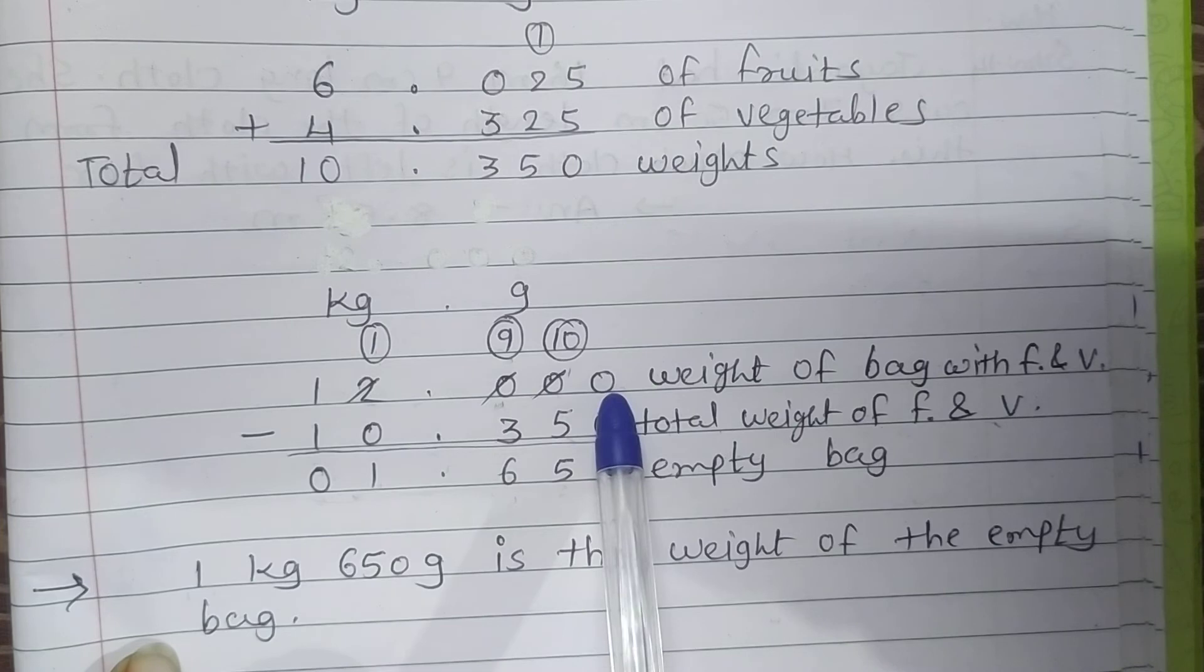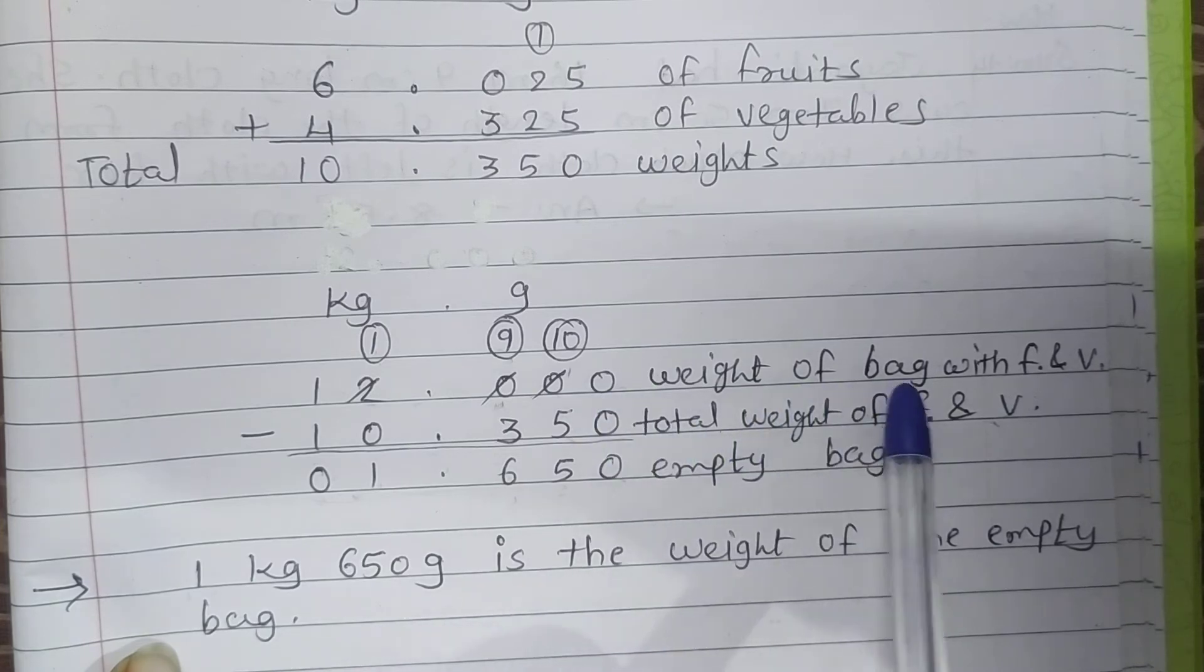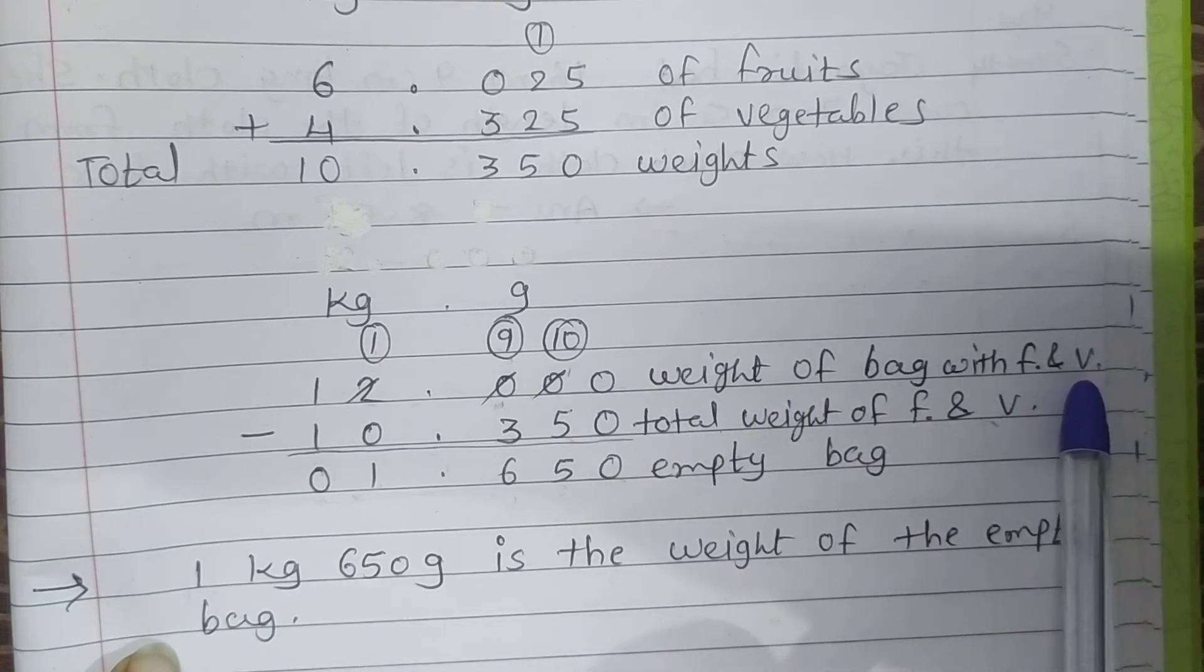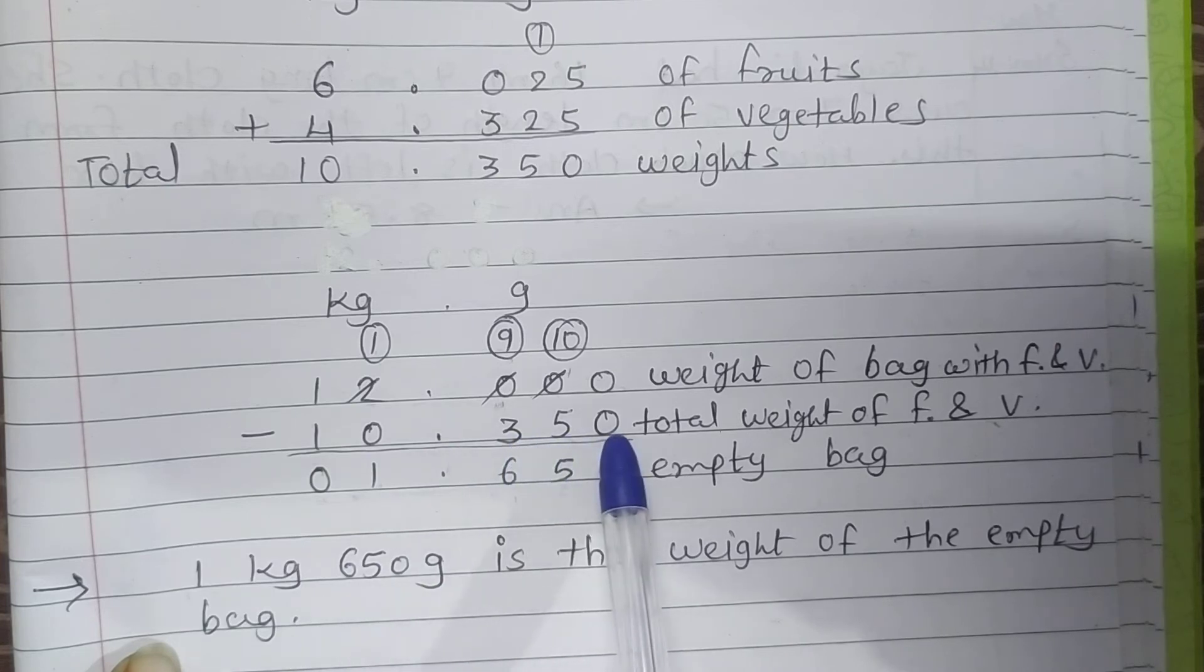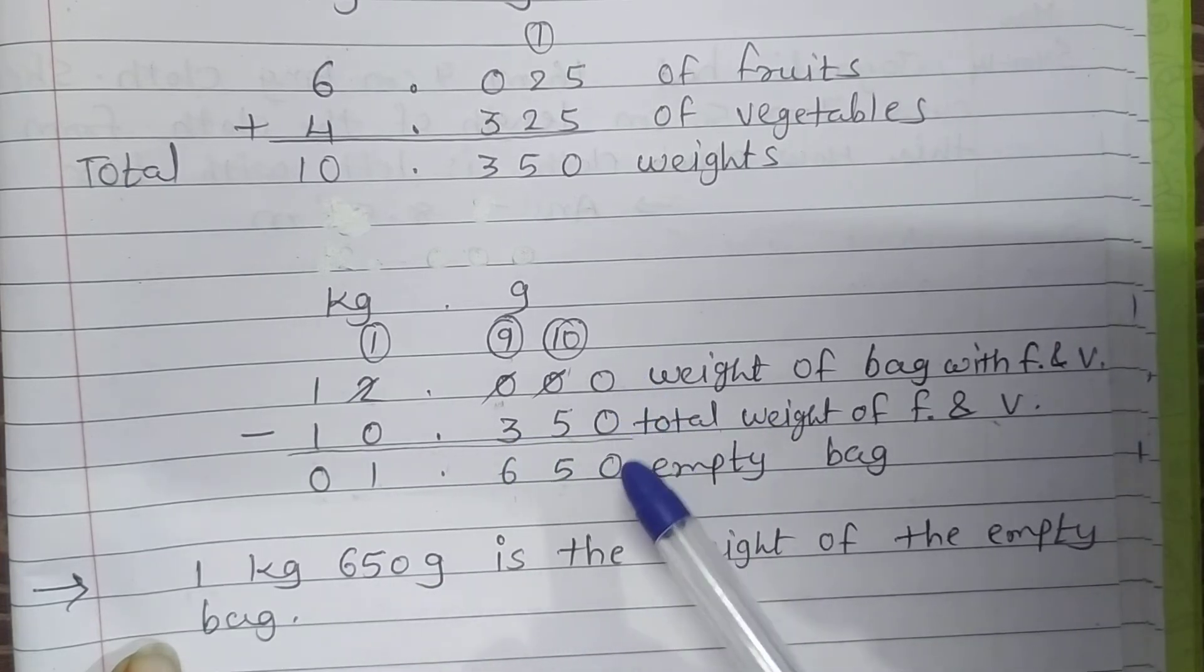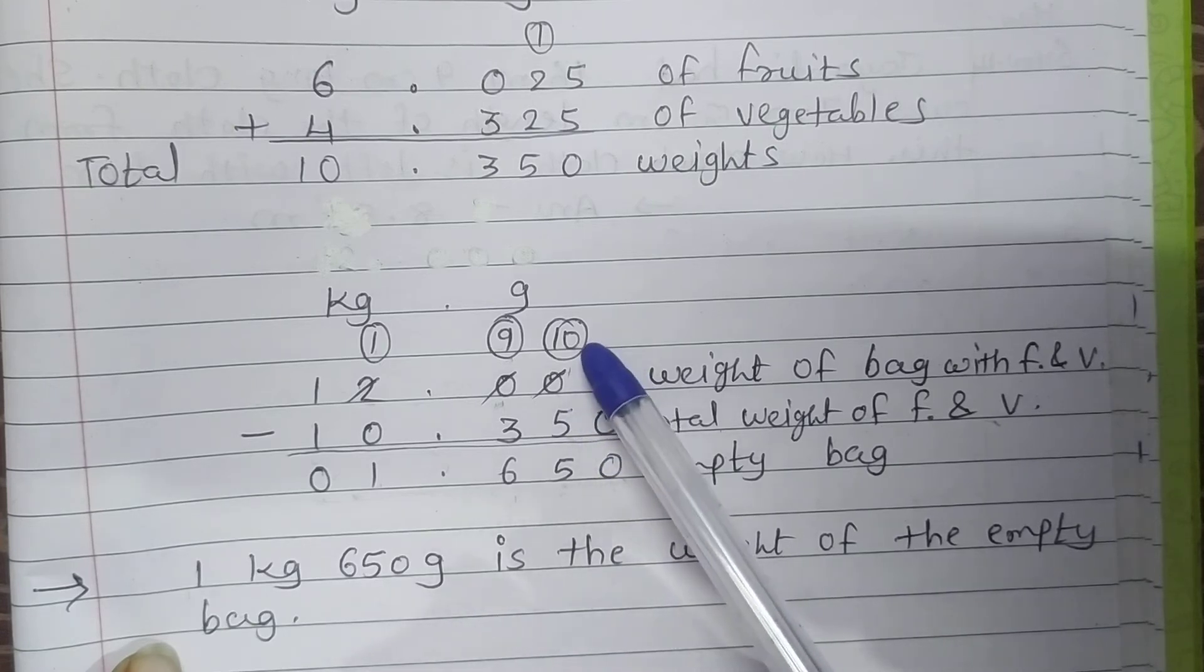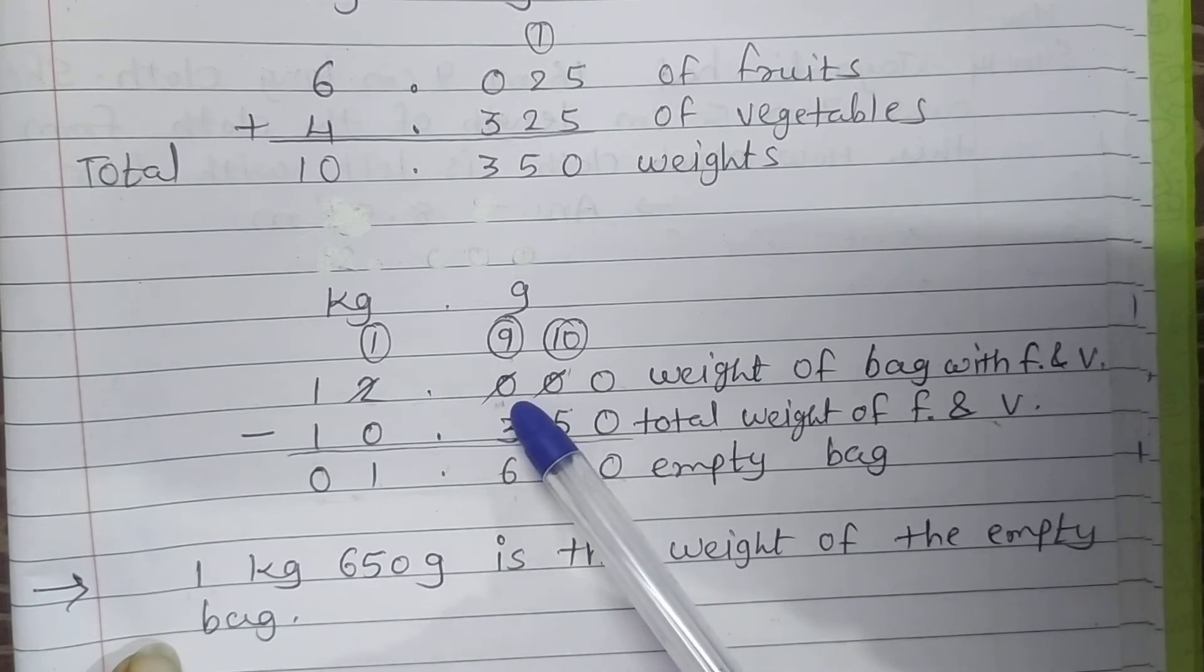Kg and gram, 12.000 because here is 3 decimal places. 12.000 weight of the bag with fruit and vegetables. Now we will subtract total weight of fruits and vegetables, it is 10.350. Let us do subtraction. 0 minus 0 is 0. 0 minus 5 is not possible, so take 10 borrow. 10 minus 5 is 5.